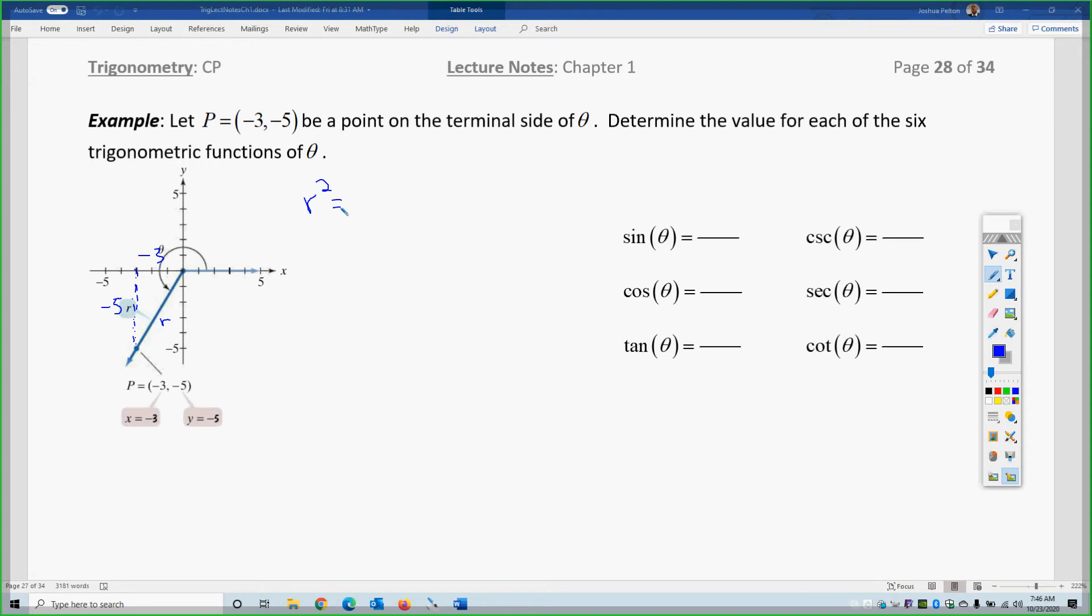r squared equals negative 3 squared plus negative 5 squared. So, r equals the square root of 9 plus 25. r equals the square root of 34. Well, 34 is 2 times 17, so that will not break apart and do not round the answers. That will make significant problems in calculations later on in the word problems. Do not do that.